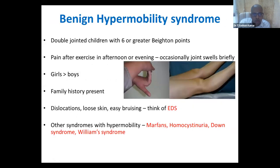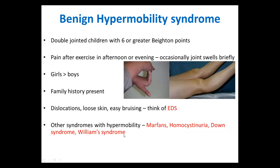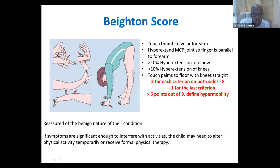Hypermobile joint syndrome is another condition — these are the double-jointed children. Girls are more commonly affected. Before labeling it as benign hypermobility, make sure you rule out Ehlers-Danlos syndrome, Marfan syndrome, homocystinuria, Down syndrome, and Williams syndrome. We use something called the Beighton score to assess this.